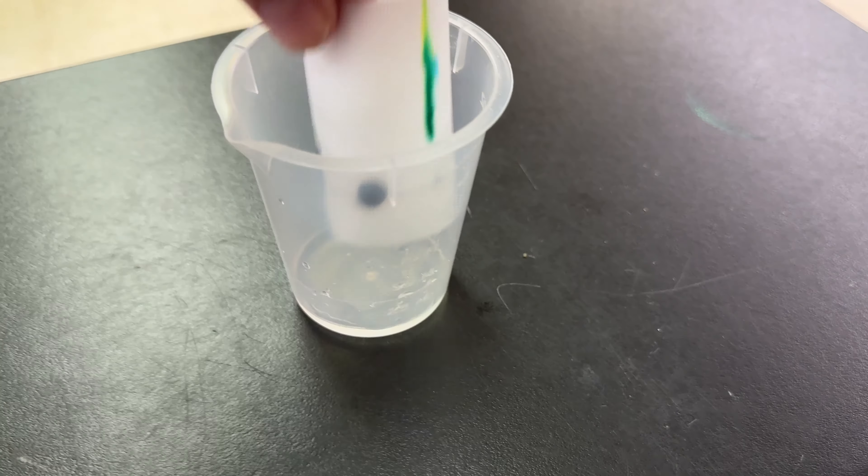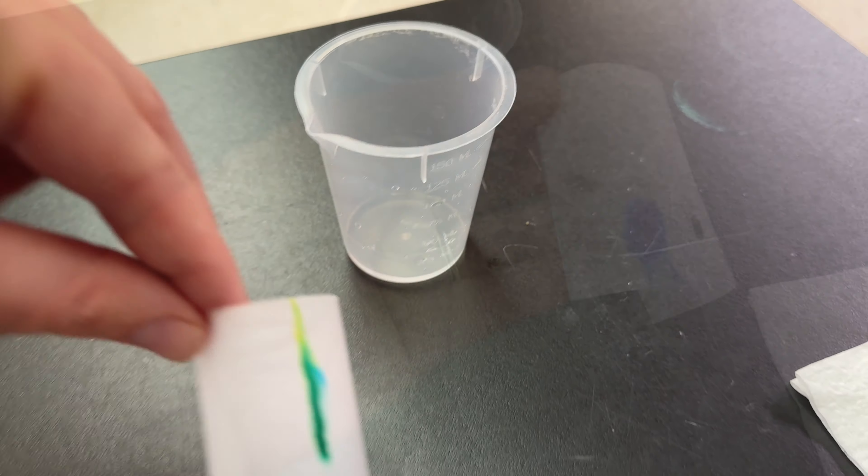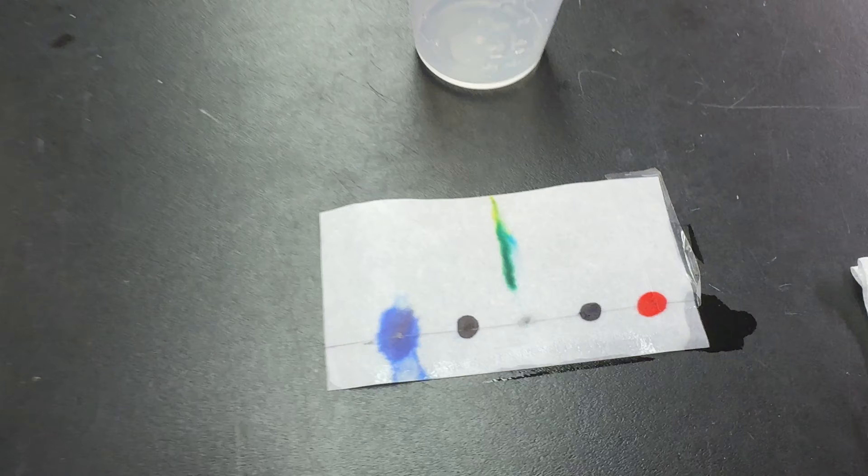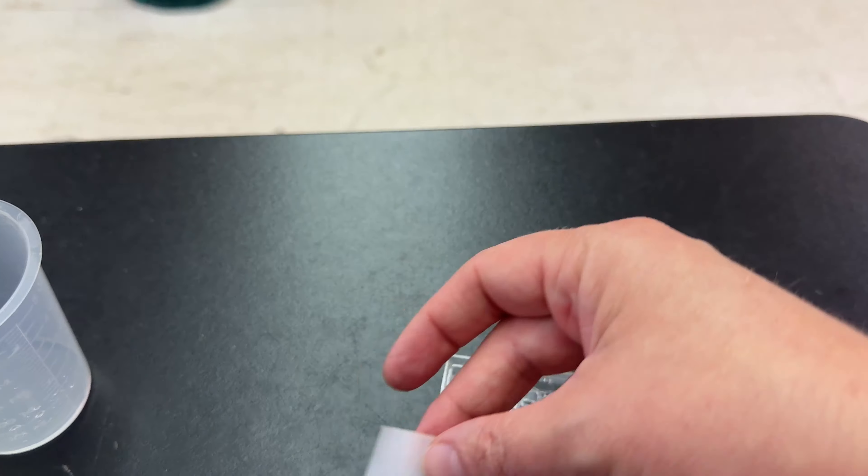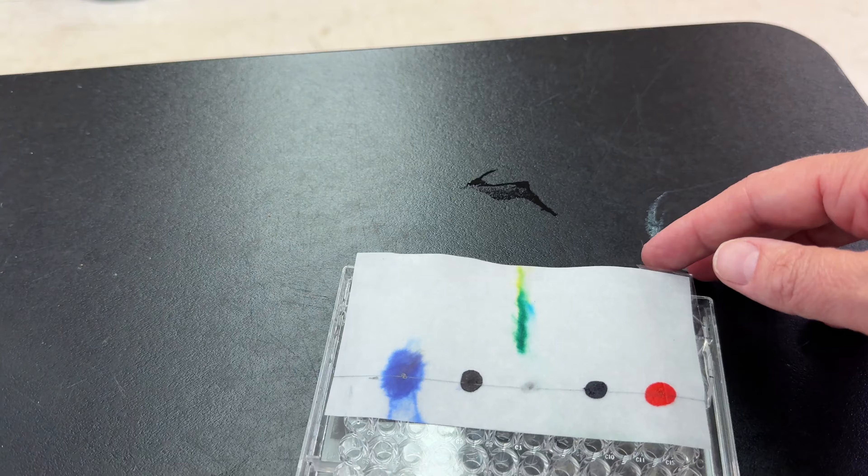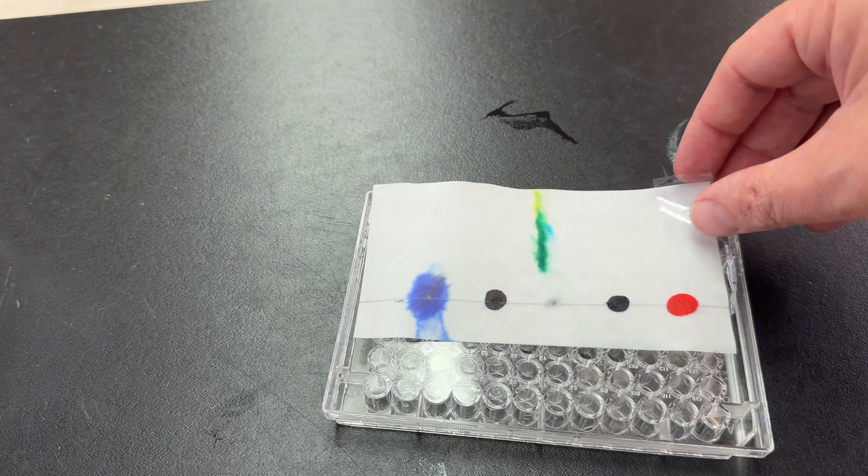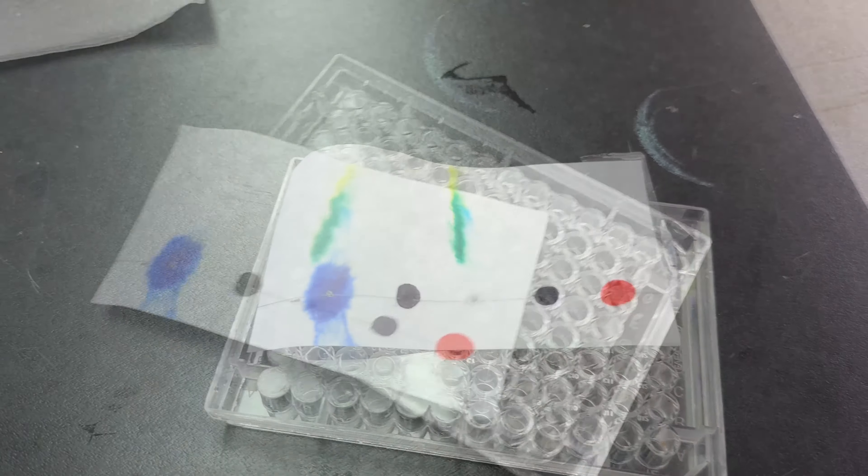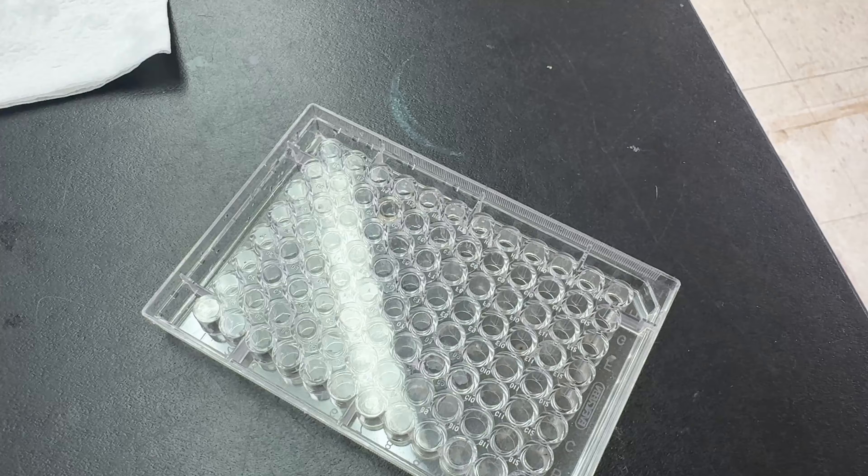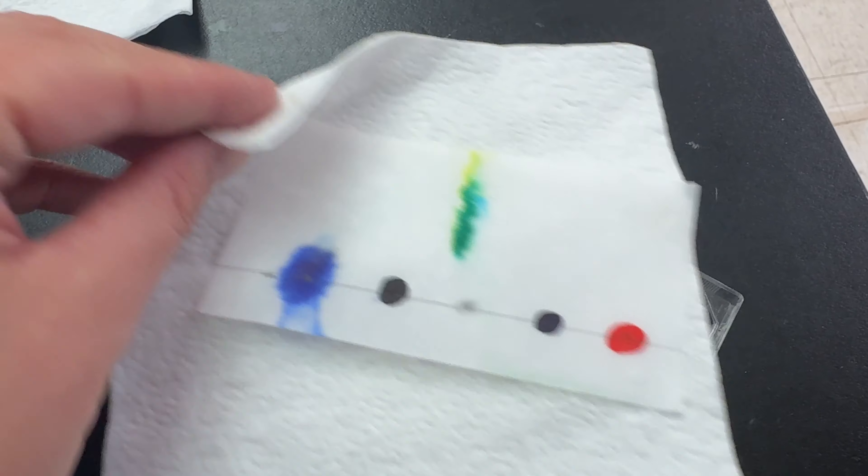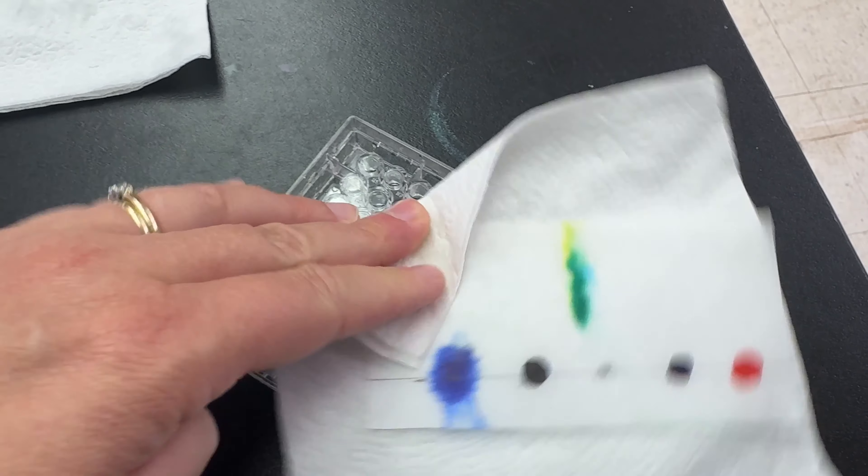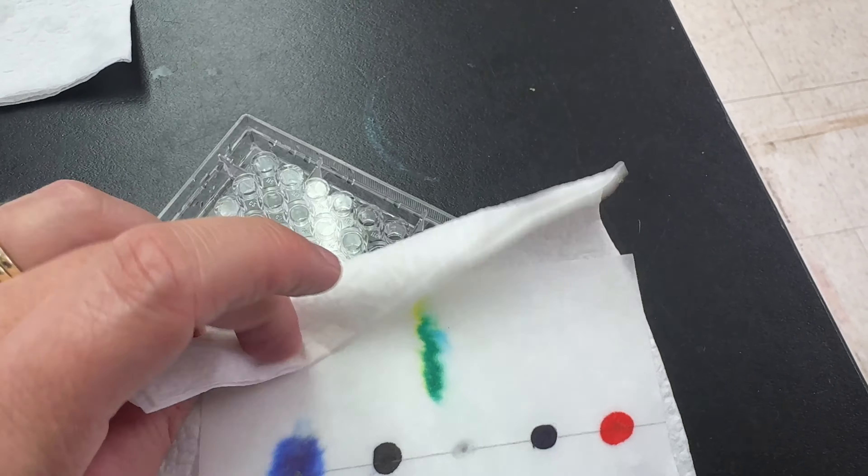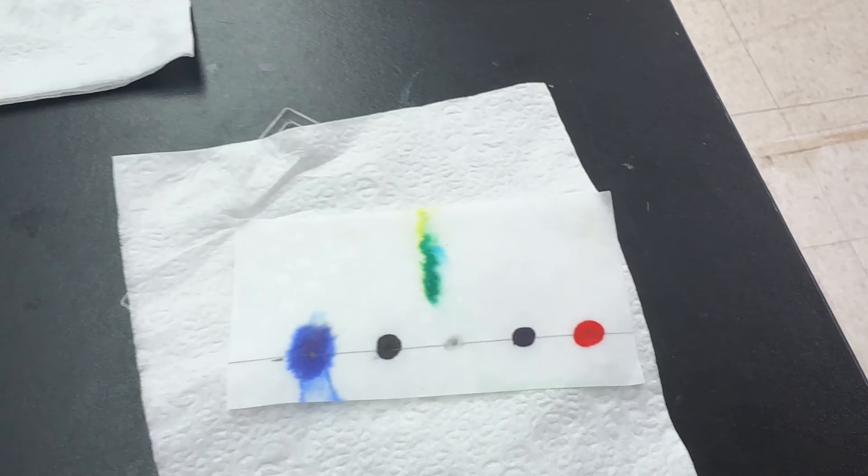Step seven: remove the paper from the beaker when the water has diffused to about five millimeters from the top edge. This may take about 30 minutes, but mine did not take that long. Carefully remove the staples or the tape and lay the paper out to dry on the reaction plate. To help my paper dry a little bit faster, I laid it on a paper towel and blotted the edges. Be careful not to blot where there is color, but you can blot the edges and the top and that'll help it dry a little bit faster.